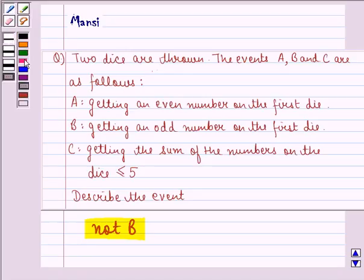So let us start with the solution to this question. First of all, we see that event B is getting an odd number on the first die. So first of all, we write down the sample space for the event two dice are thrown. Then we write down the sample space for the event B.